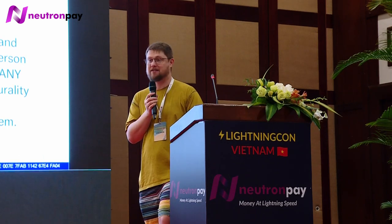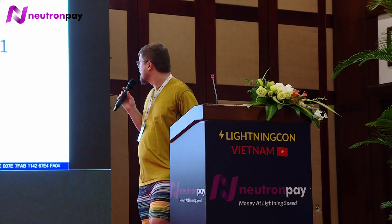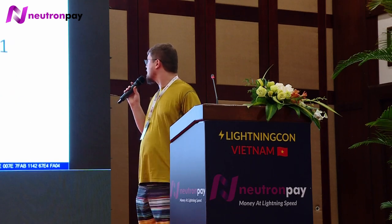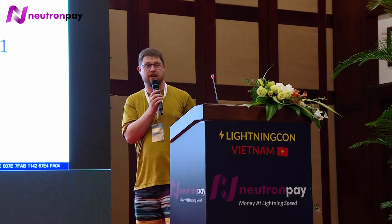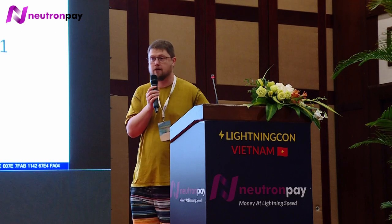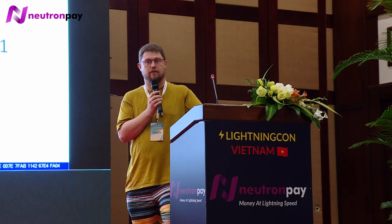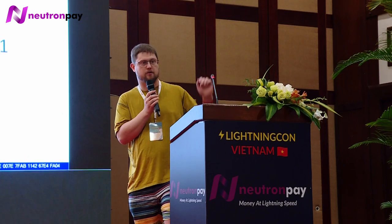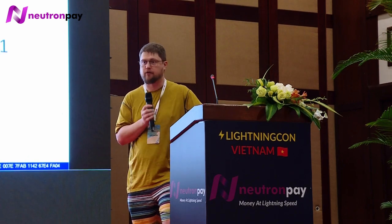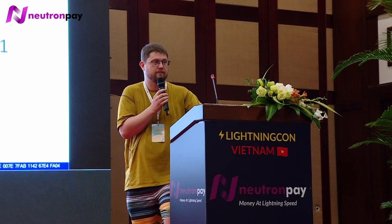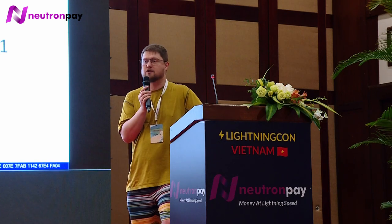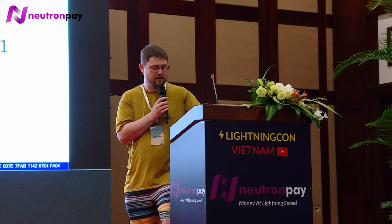A notable counter-example is my open timestamp servers — they work by repeatedly replacing transactions with higher and higher fees, updating the Merkle root of all data being timestamped. In that case RBF is just much cheaper than the alternative. But in general: try to estimate fees correctly the first time and leave replacement as a backup. Full RBF isn't really relevant to the de-anonymization discussion.